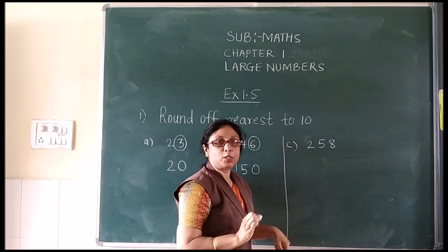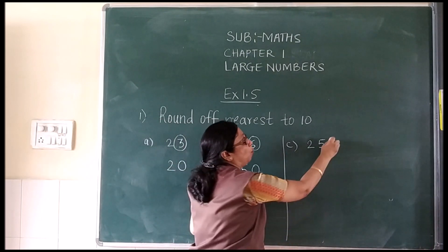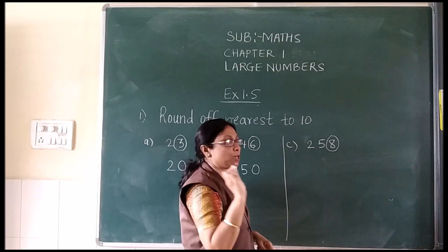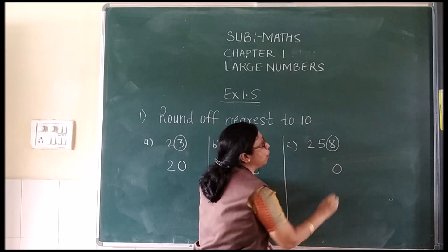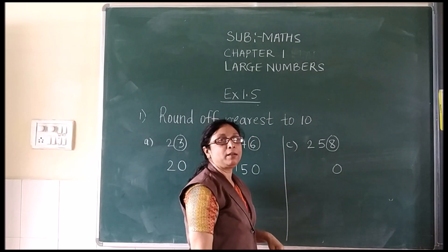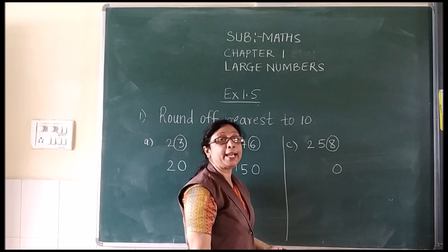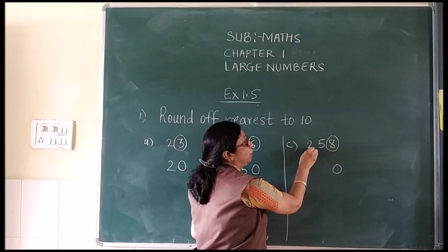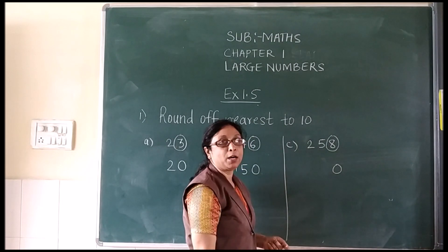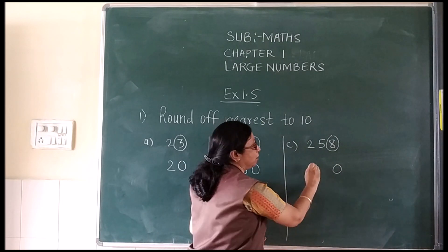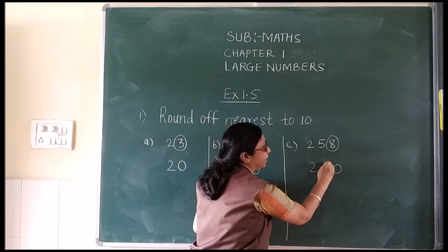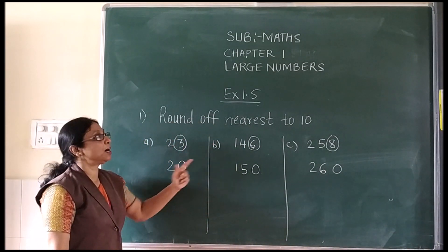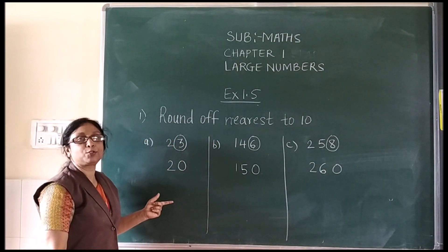Third sum: circle the ones digit, place 0 below. The circled digit is 8 which is more than 5. When it is more than 5, add 1 to the outside number. 25 plus 1 = 26. So in this way you can solve the nearest to 10 sums.